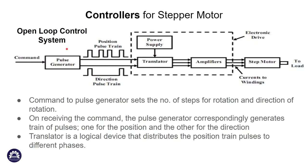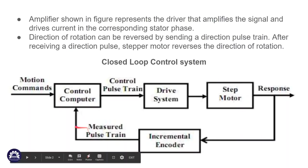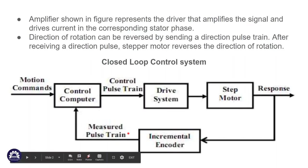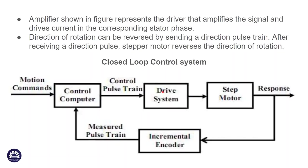In the closed loop control system, the motion commands are in the control computer, which generates a pulse string. That goes through the translator and drive system to the stepper motor. The stepper motor response is fed back via an incremental encoder. If there is an error, the control computer detects and corrects it, making it a closed loop control system.